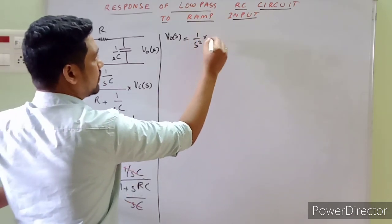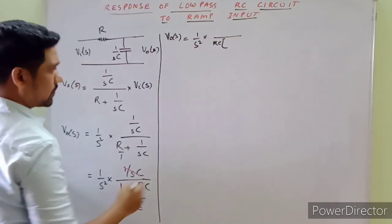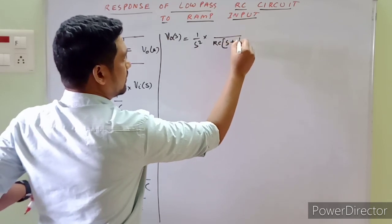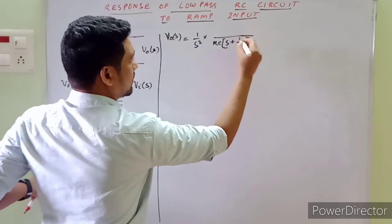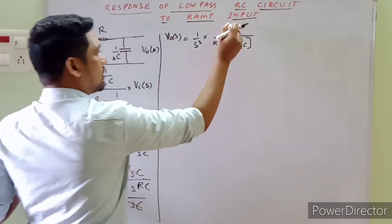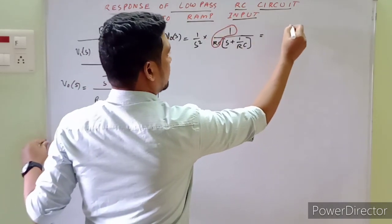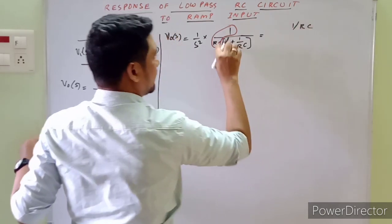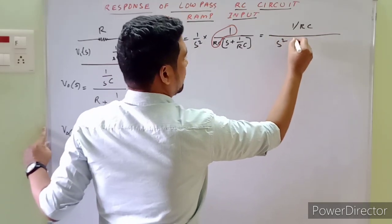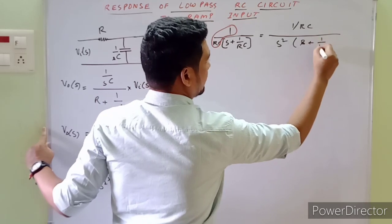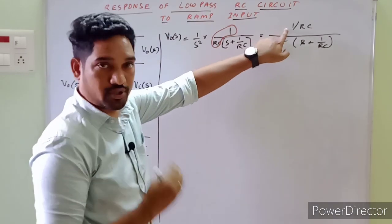Taking RC as common from the denominator, V₀(s) becomes [1/(RC)] / [s² × (s + 1/(RC))]. This is the simplified form. We cannot stop here — we need to apply partial fractions to proceed further.